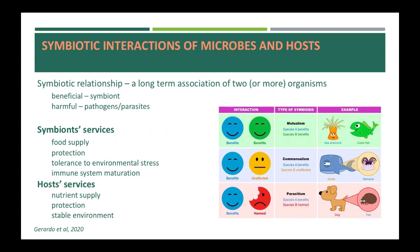Symbioses range from dependence of the host on a single microbiome species to dependence on a complex microbiome of many species. The symbiotes can provide many benefits to the host, including food supply, protection against pathogens and predators, and they can increase the tolerance to environmental stress and help immune system maturation. Although beneficial symbiotes increase the host's fitness, they are not without cost. The host also provides the symbiotes nutrient supply, protection from other pathogens or predators, and a stable environment for them.